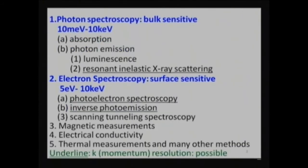There are several approaches to study the electronic structures. One is photon spectroscopy, which is bulk sensitive. One can study from the terahertz region up to the X-ray region, from 10 millielectronvolt up to 10 kiloelectronvolt. Absorption and photon emission can be utilized for this purpose. Today I will talk about resonant inelastic X-ray scattering.